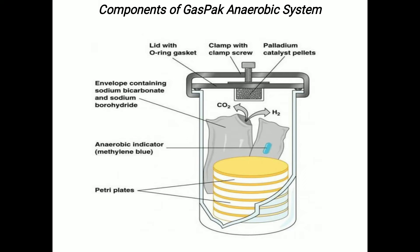The components include a polycarbonate jar or anaerobic container, then we have a lid with a gasket to prevent air flow for the jar system. Then we have an indicator strip, which is a strip impregnated with an oxidation-reduction indicator such as methylene blue and resazurin.